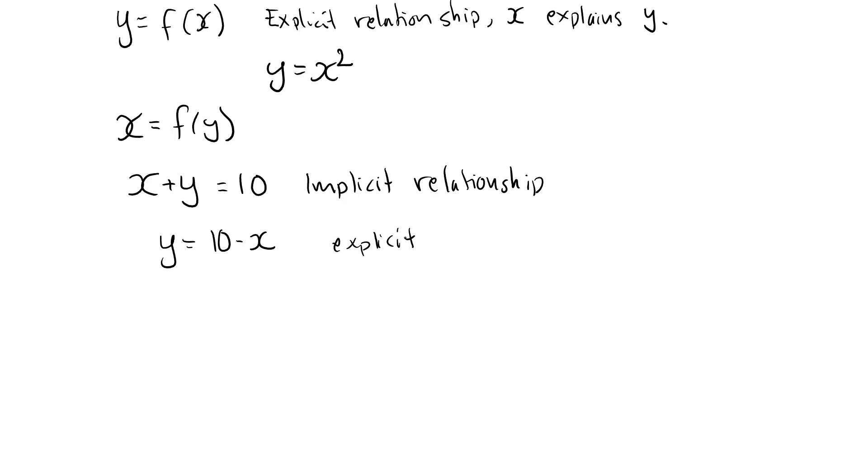We can also make it explicit in x by moving y to the other side and writing x is equal to 10 minus y. However, not all implicit relationships can be converted into an explicit one.